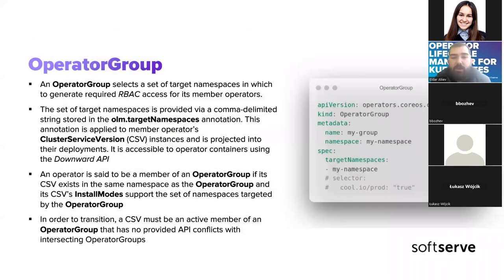The last resource is the OperatorGroup. To install operators to your cluster, you need to define which namespaces your operator can be installed into — by default OLM will prevent installation into the basic namespace. To allow OLM to install your operator to specific namespaces, you create an OperatorGroup resource and describe all the target namespaces. You can specify namespaces by name or use a label selector to select multiple namespaces.